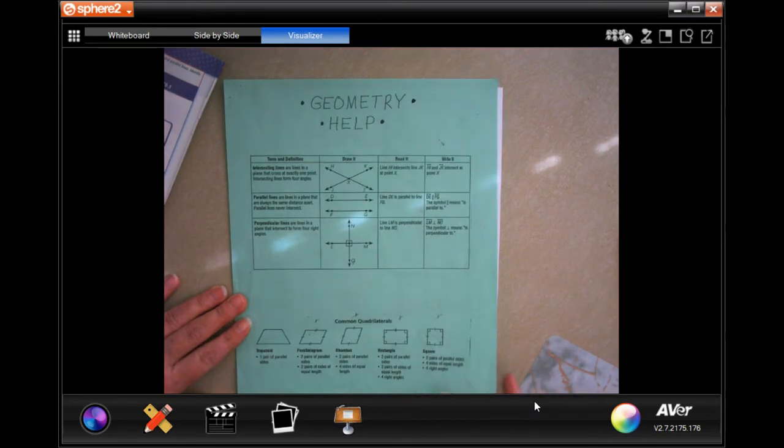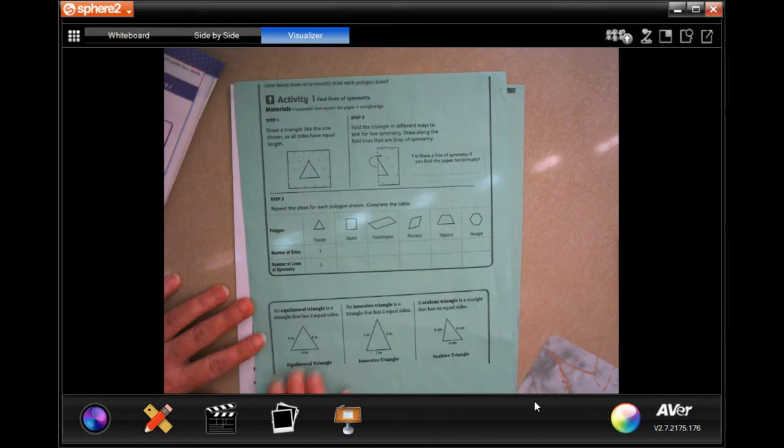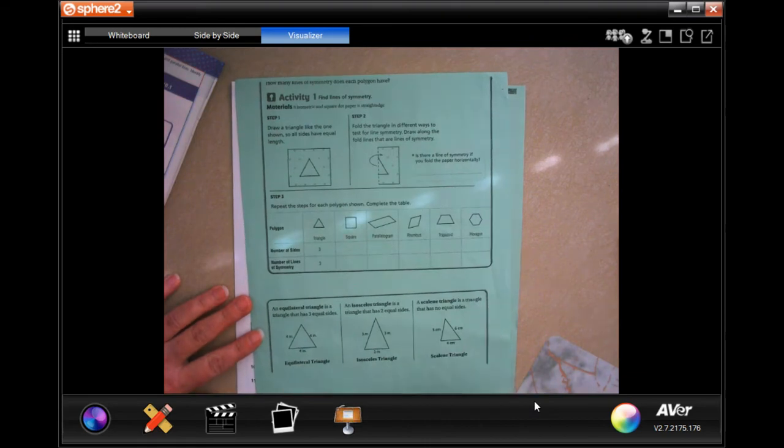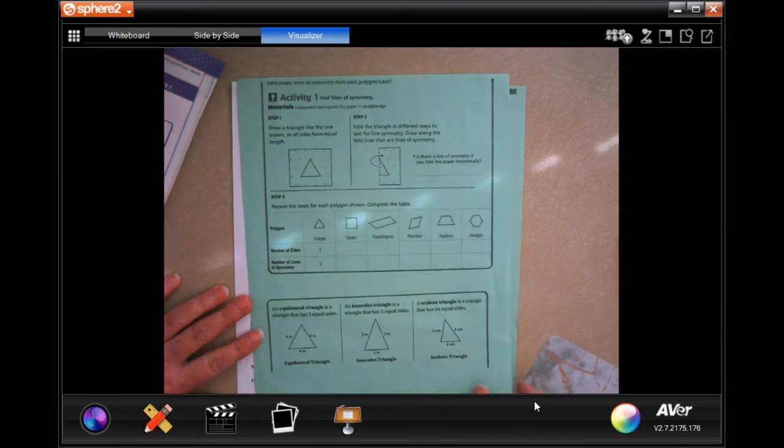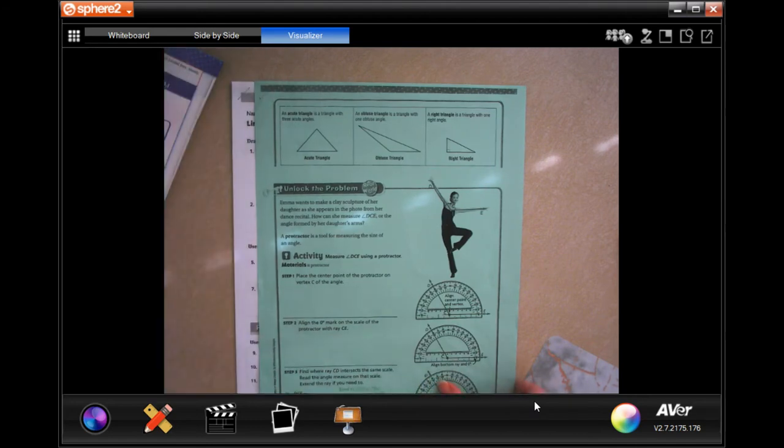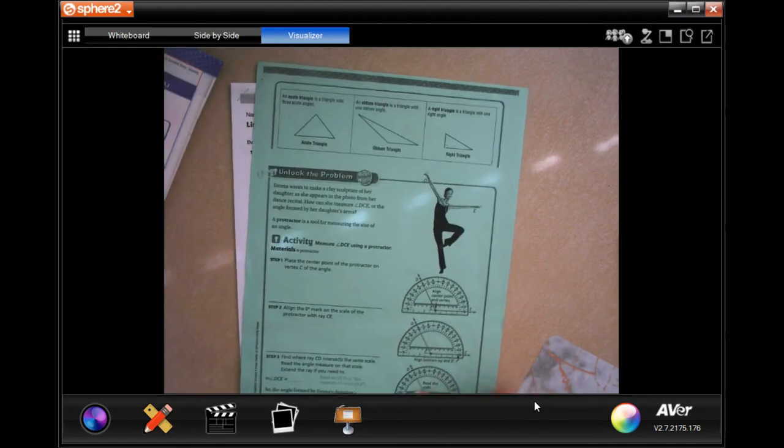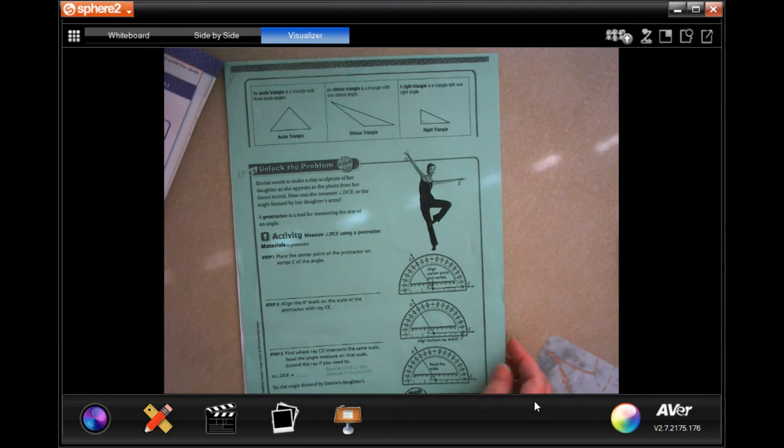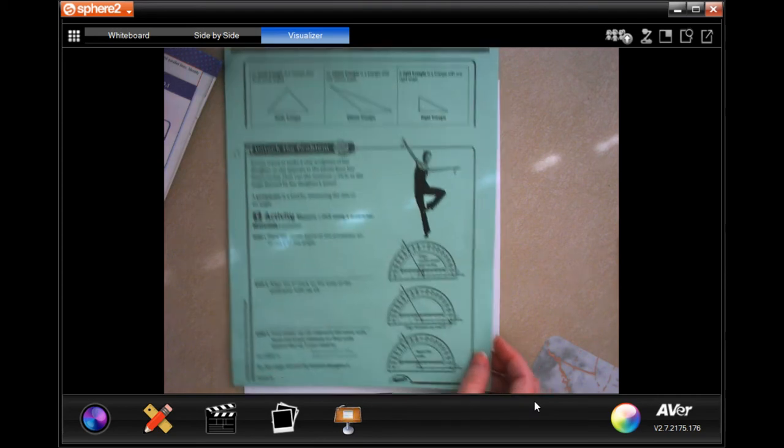Copy it down, whatever you need to do. It's directly from the book and gives you an idea of what you need to know. Go ahead and screenshot that and do whatever you need to do to make sure you've got that information.